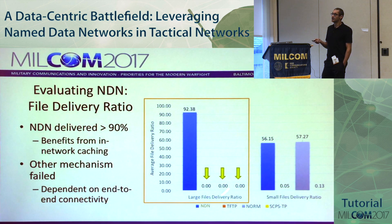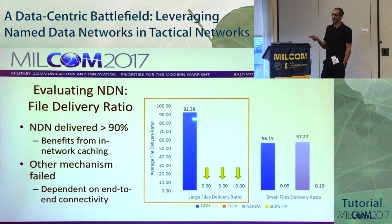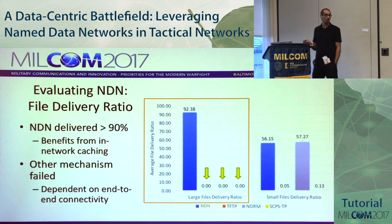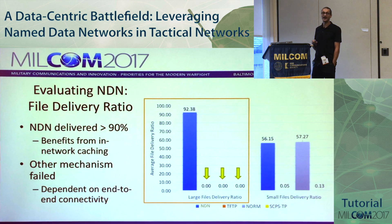Looking at the file delivery ratio results: for large files (one megabyte each, 16 total), in an end-to-end IP scenario, we delivered about 92%. The other protocols — TFTP, NORM, and SCTP — delivered nothing, because end-to-end connectivity failures caused complete failure. They simply couldn't deliver anything at all.